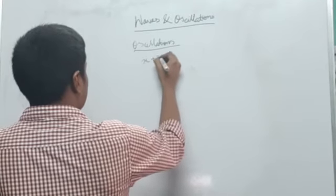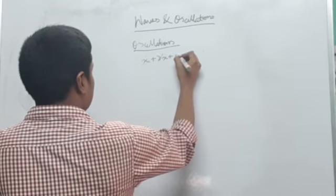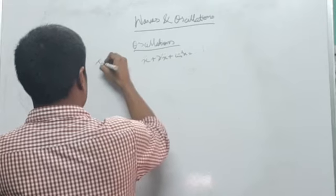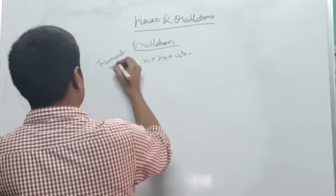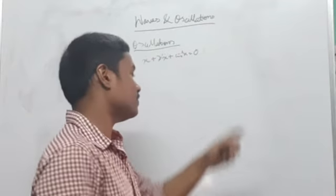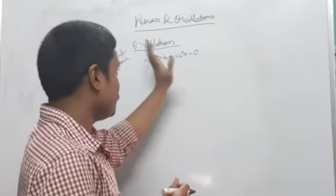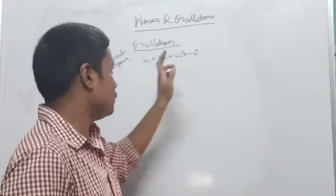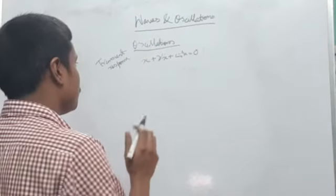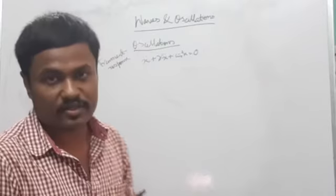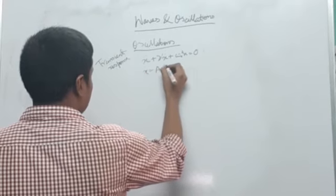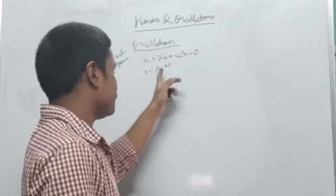So how do we look at the transient response? For the transient response, we solve the homogeneous differential equation instead of the full equation containing the driver term. We ignore the driver for now and set the right-hand side to zero, making it a homogeneous differential equation. To solve it, we assume a trial solution of x equals A times e to the power of alpha times t.